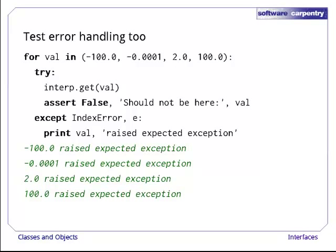And let's test the error handling, too. That's just as much a part of the class's interface as the values it returns when it works normally. Notice that our tests include a value that's just less than the minimum we should accept, minus 0.0001, and exactly equal to the maximum we should reject, 2.0.